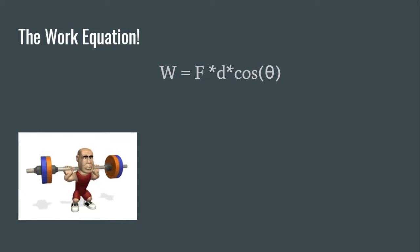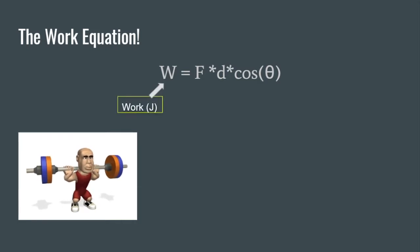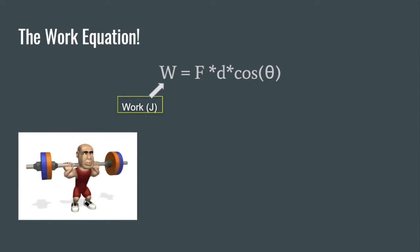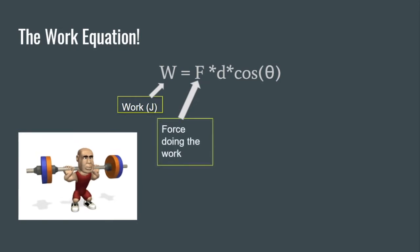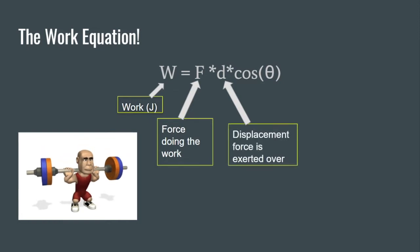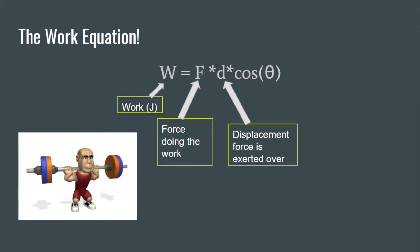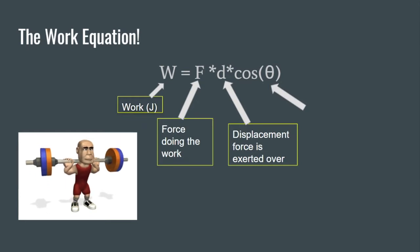The work equation is pretty simple: W = F × d × cosθ. W stands for work, and work is measured in joules because work is the transfer of energy and energy is measured in joules. F stands for the force that's doing the work, and d is the displacement — the distance that the force is acting over.